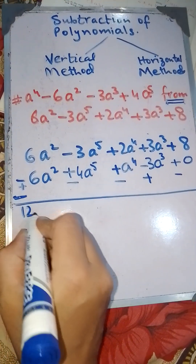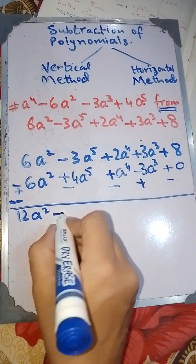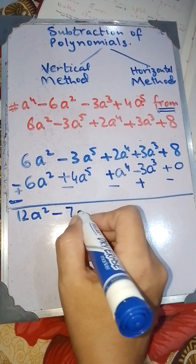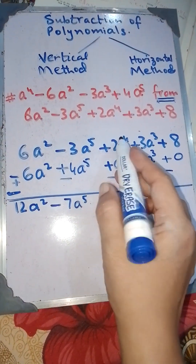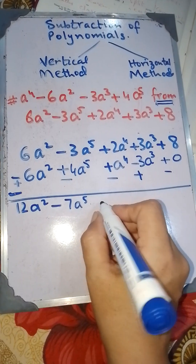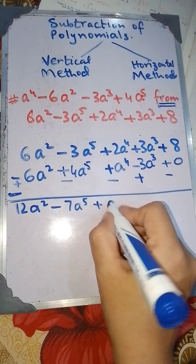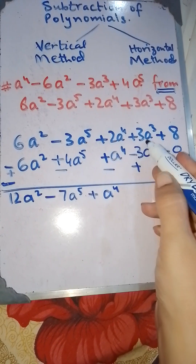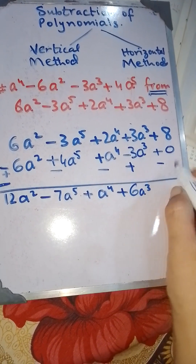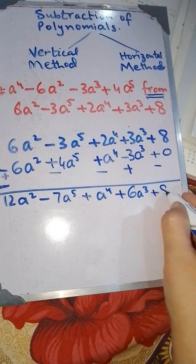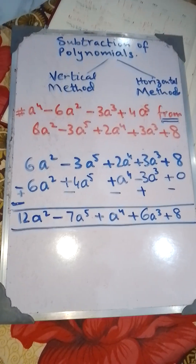Now add. Plus 6 and plus 6 gives you 12a². Minus 3 minus 4 gives you minus 7a⁵. Positive 2 minus 1 gives you positive 1a⁴. Plus 3 plus 3 gives you plus 6a³. And 8 minus 0 gives you positive 8. This is the answer obtained from the vertical method.